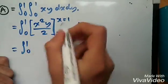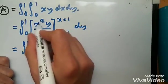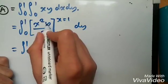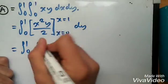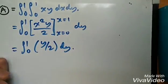And then, replacing the values of x with 1 and 0, we'll be left with, this would be 1 times y, so it would be y over 2 minus 0. So we're going to have y over 2 dy. And once again, integrate this one, which is quite easy.